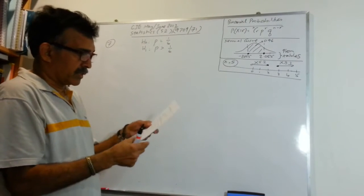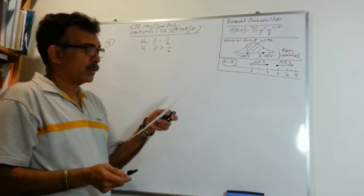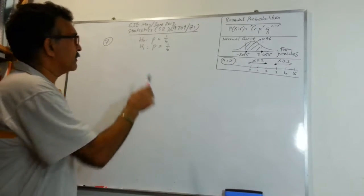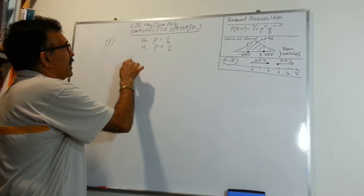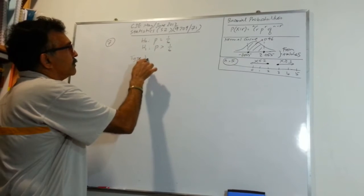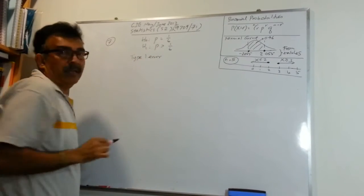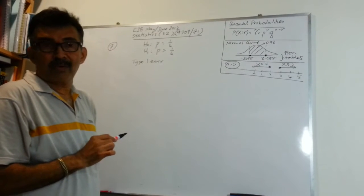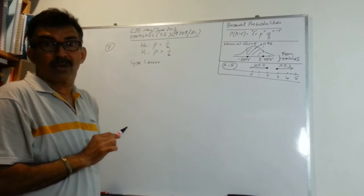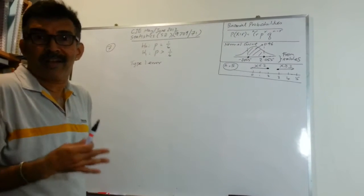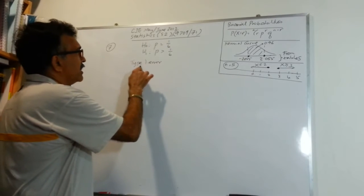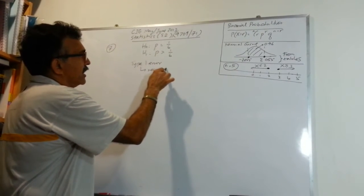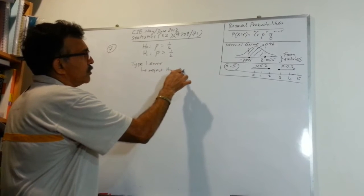The question has a few parts. First, we are asked to state what is meant by a type one error. A type one error — be careful when you answer this in the exam — is not a probability. A type one error is an error that happens when you reject H0 when it is true.